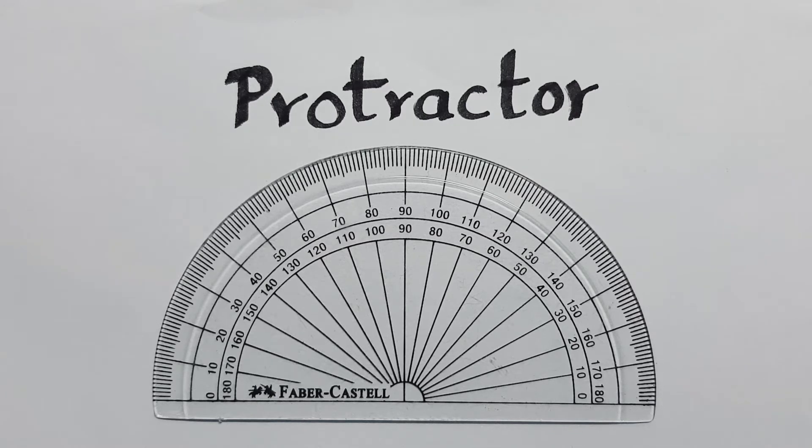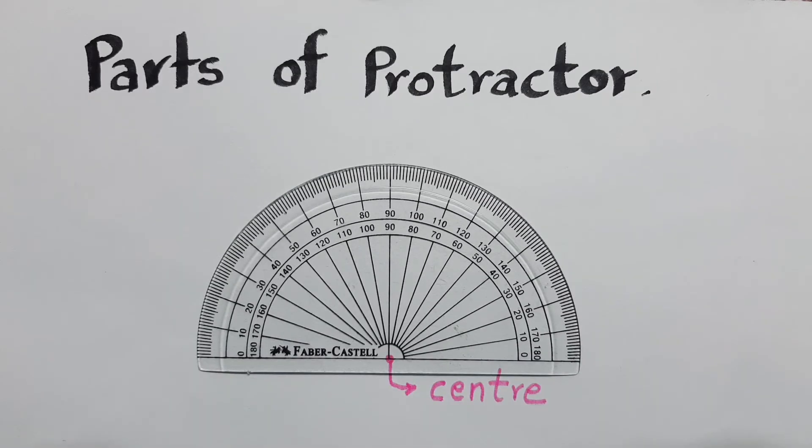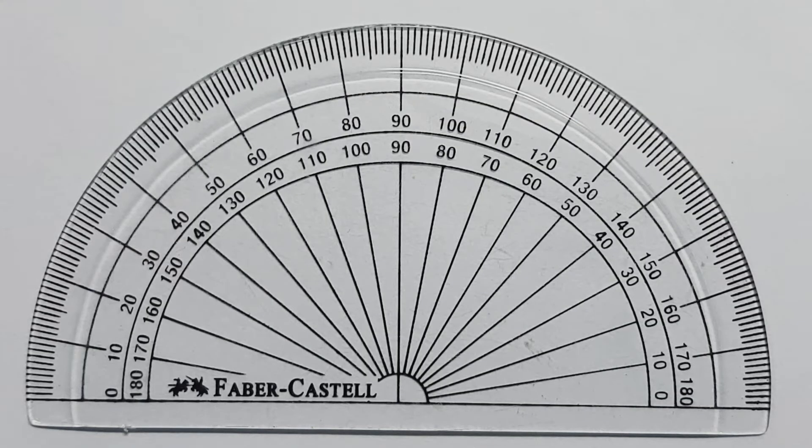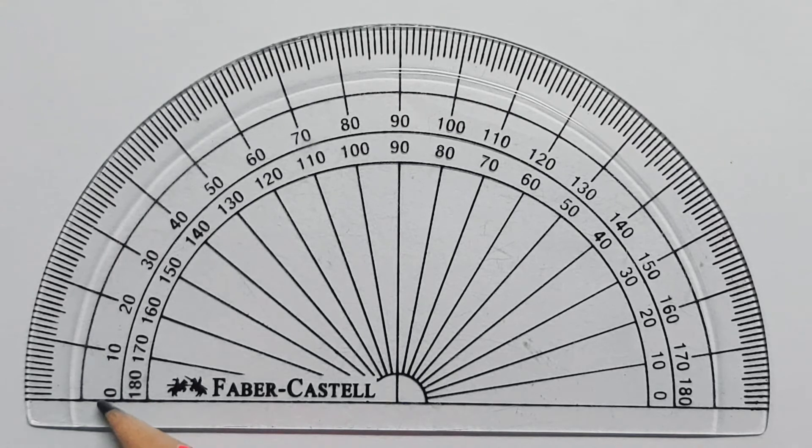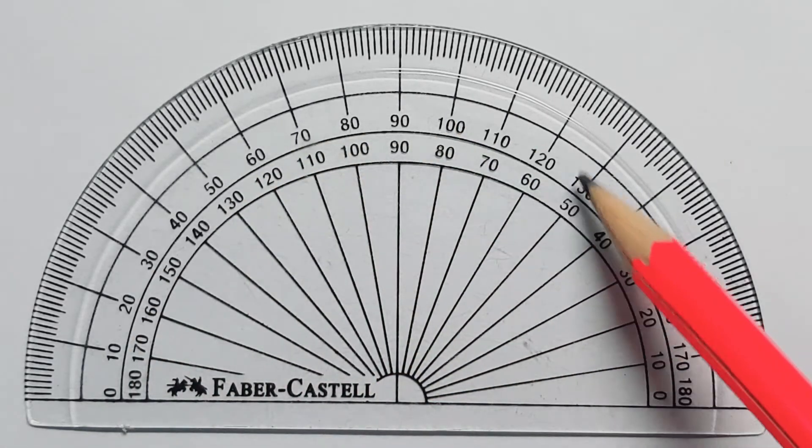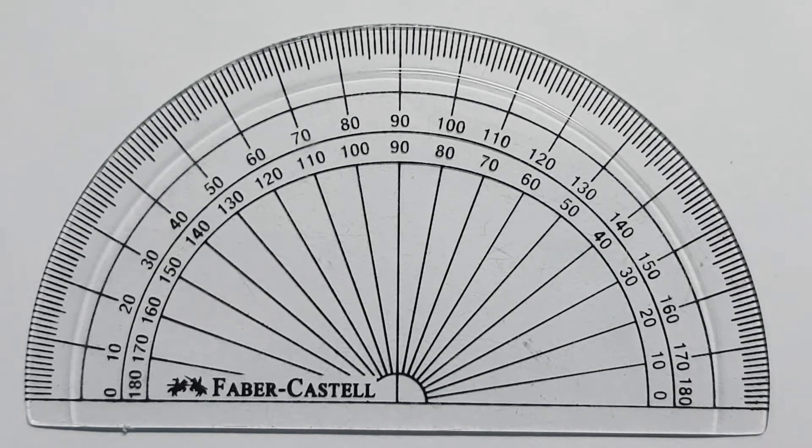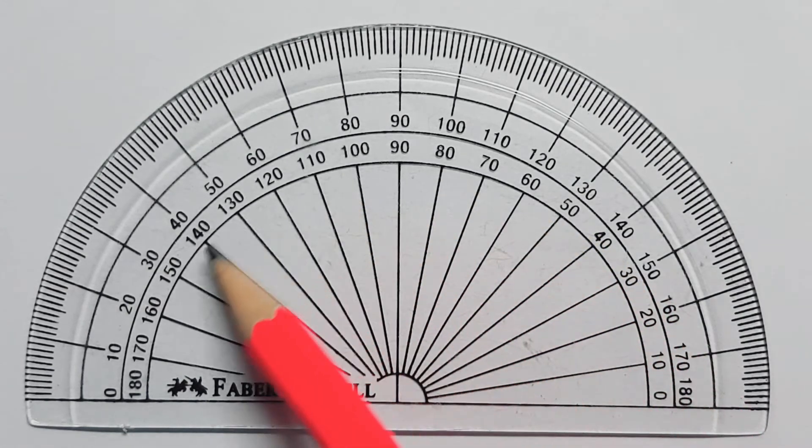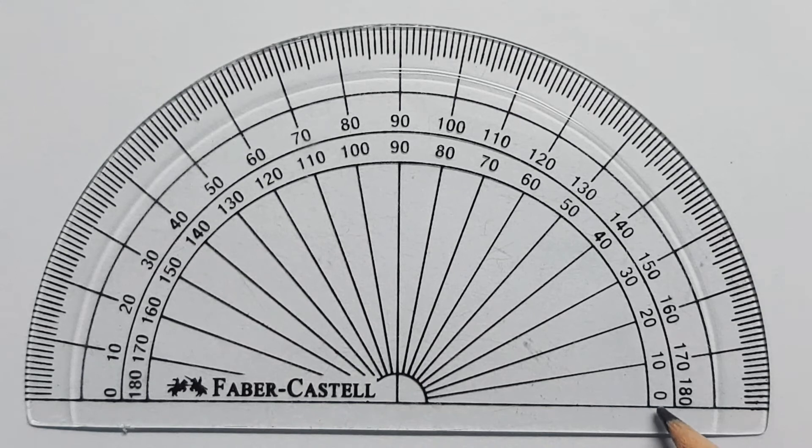Now, let us see the different parts of the protractor. The most important part of the protractor is the center, which is marked in pink color. Here, you can see that this is the center of the protractor. If you see the protractor carefully, the protractor has got two scales. Both the scales start with 0 degree and end with 180 degree.